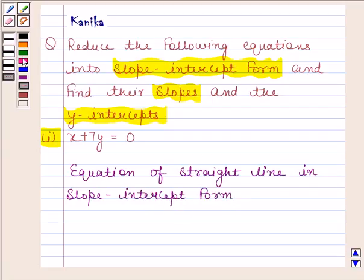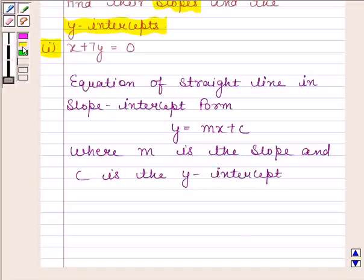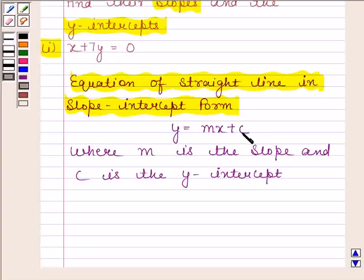is given by y equals mx plus c, where m is the slope and c is the y-intercept. Always remember that the equation of straight line in slope-intercept form is y equals mx plus c, where m is the slope and c is the y-intercept.